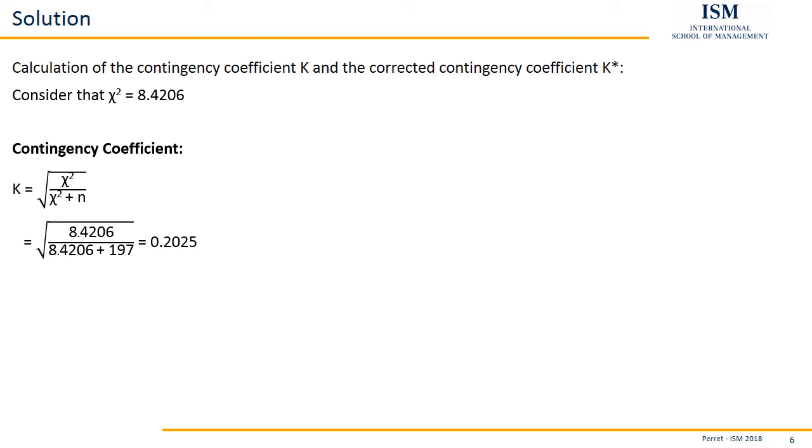This takes care of the amount of observations, but this does not take care of the size of the contingency table. Why is size of the contingency table important? If you have a very large contingency table, you have more terms in your chi-squared statistic. If you add up more terms, there's a higher potential for getting a larger chi-squared statistic. So we need to take care that the size of the contingency table is also accounted for. We do this by correcting our contingency coefficient.